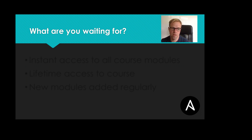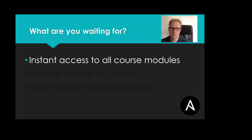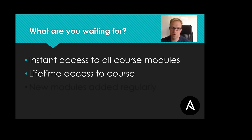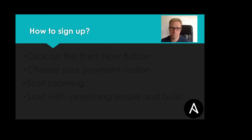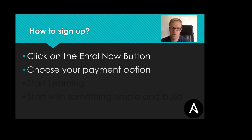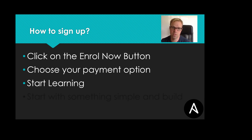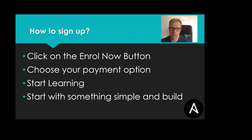So what are you waiting for? The course is ready for you with instant access to all the modules. When you purchase the course you get lifetime access and new modules will be added regularly as I discover new things you can do with Ansible. To sign up, just click the enroll now button on the website. You can pay for the course outright or split the payment over four easy payments, and then start learning. The motto of this course is to start with something simple and continue to build.